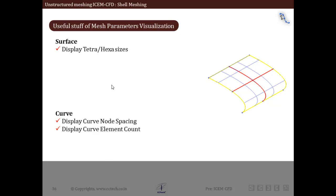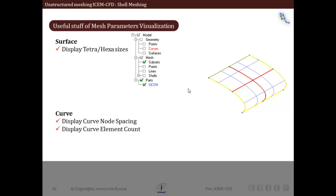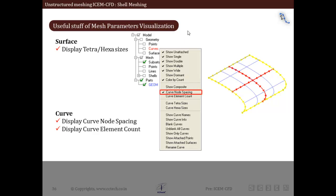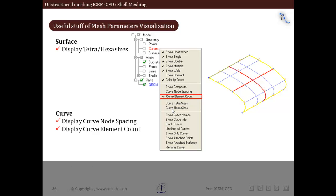Now we will see some visualization-related tools used to see the effect of inputs for surface and curved mesh. First is 'display tetra/hexa sizes.' To use this, go into surfaces within the model tree, right click, and a selection panel pops up. Select tetra sizes to see the tetra sizes given, or hexa sizes to see the hexa sizes. Similarly for curves, go to curves in the model tree, right click, and select 'curve node spacing' to show the spacing of nodes given for all curves, or 'curve element count' to show the element count for the curves. These tools are for visualization purposes — we can see the effect of inputs immediately on the screen.